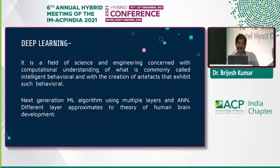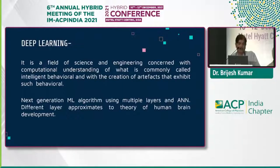Next-generation machine algorithms use multiple layers and artificial neural networks, which is equivalent to the brain — equivalent to neurons in the brain — with different layers to approximate theory or even brain development.